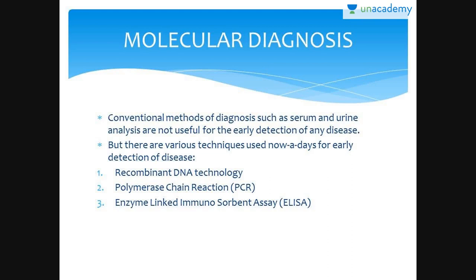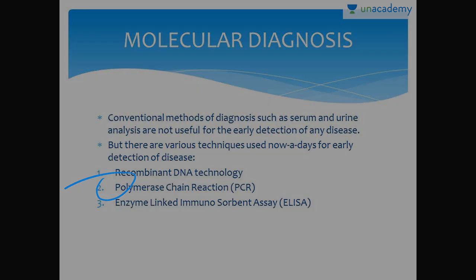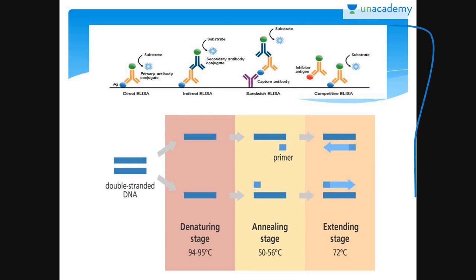Molecular diagnosis allows early detection of disease not possible by conventional methods like serum or urine analysis. Techniques include recombinant DNA technology, PCR, and ELISA. Even very low concentrations of bacteria or virus can be amplified and detected by PCR, which is also used to detect mutations in genes in suspected cancerous patients. A single-stranded DNA or RNA tagged with a radioactive molecule, called a probe, is allowed to hybridize to its complementary DNA in a clone of cells, followed by detection using autoradiography; clones with mutated genes cannot form complementary bonds and hence do not appear on photographic film.